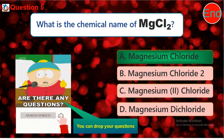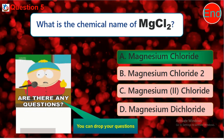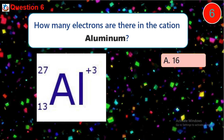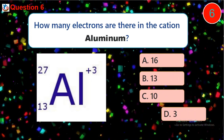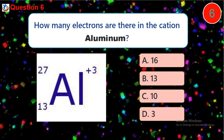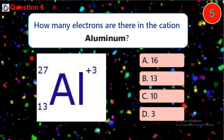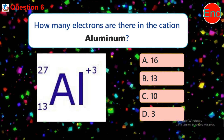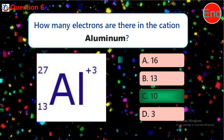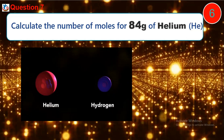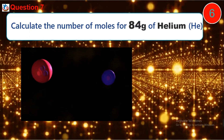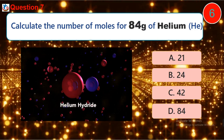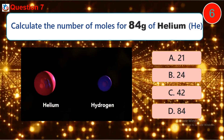It is totally free. Do not forget to drop your comment in the comment section. Thank you. Question 6: How many electrons are there in the cation aluminum? A) 16. Question 7: Calculate the number of moles for 84 grams of helium. A) 21, B) 24, C) 42, D) 84.